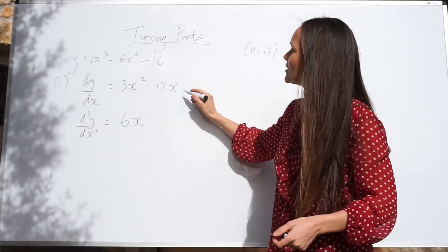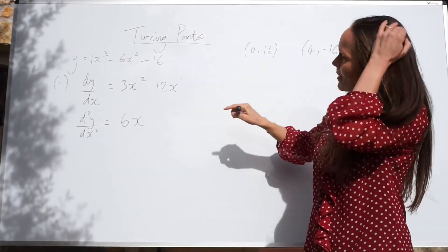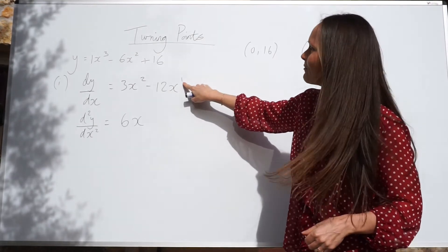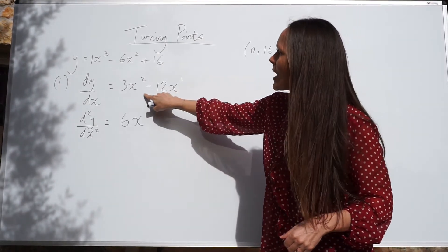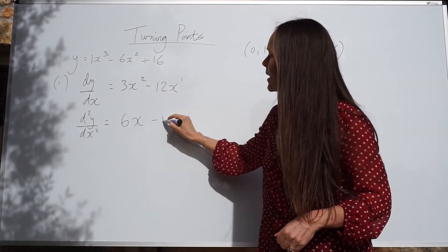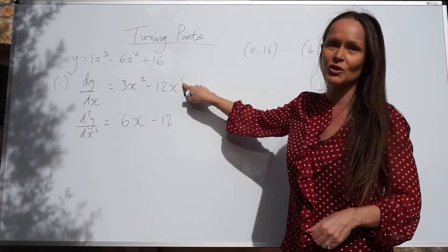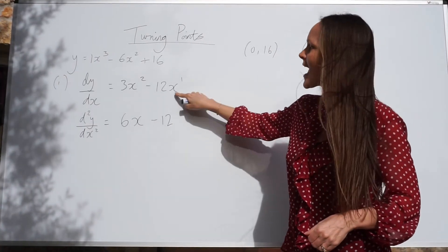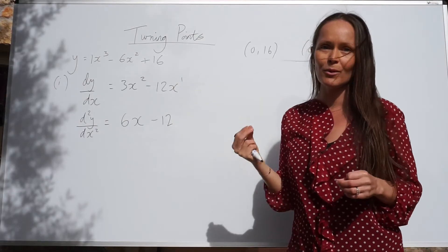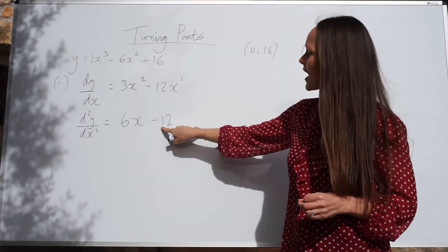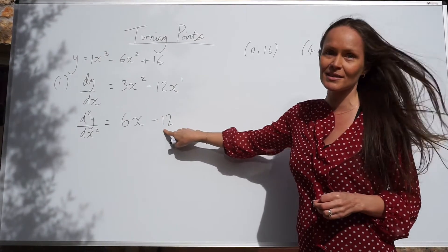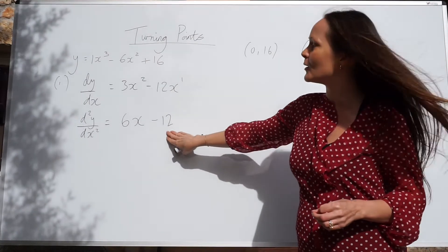Then, if I differentiate minus 12x, remember there's a 1 here that we don't usually write. 1 multiplied by negative 12 is negative 12. This would change to a 0, but remember, x to the power of 0 is equal to the number 1, and if you times this by the number 1, it just stays the same. So this is gone, and we're left with negative 12.